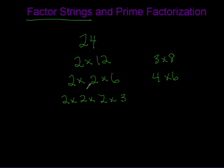Just like we learned in the previous lesson with the turnaround rule, it doesn't matter which order you put the factors in — it will always equal the same amount. So if you had two times six times two, that's the exact same factor string as two times two times six; it's just written in a different order.